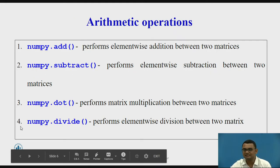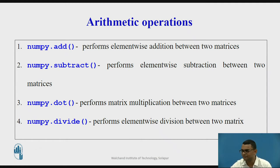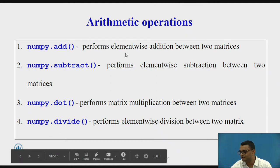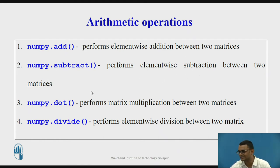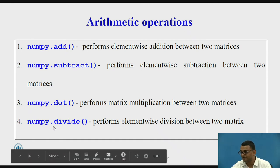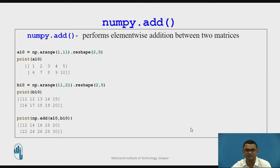These are some basic arithmetic operations that we can perform on two matrices. NumPy dot add returns element-wise addition between two matrices. Similarly, subtract performs element-wise subtraction, the dot function performs matrix multiplication, and the divide function performs element-wise division between two matrices. Let us see examples of all these functions.